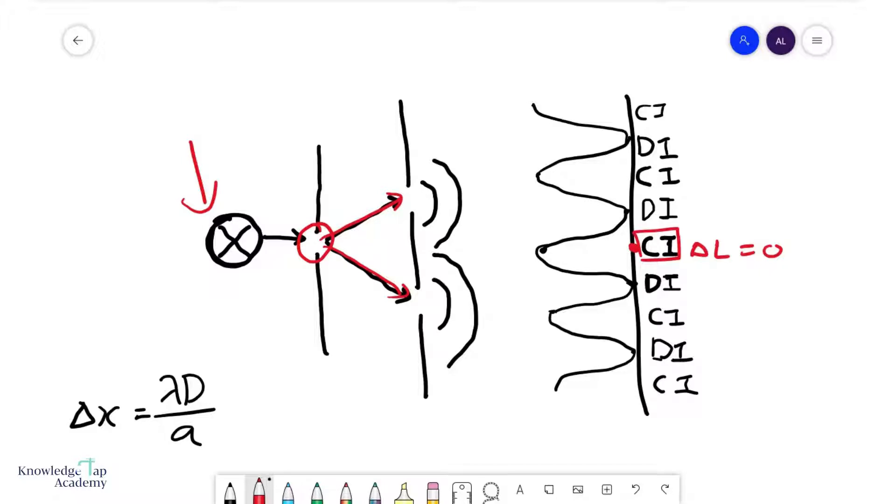Now, as you start to move either way, what you're going to realize is something quite interesting. Let's just choose any point here, you will notice that this path length is a little bit longer than this path length.